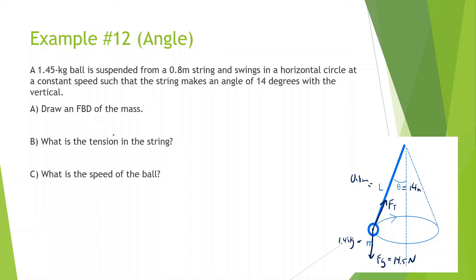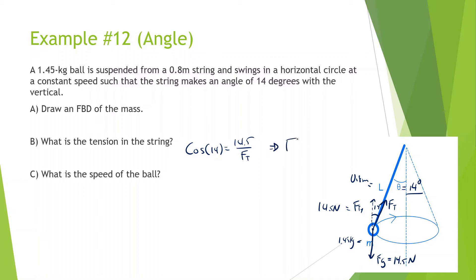What is the tension in the string? This angle here is going to be the same as the string angle, 14 degrees. The force of tension in the y direction equals the force of gravity, so that's also 14.5 newtons. We can do cosine of 14 equals adjacent 14.5 divided by the hypotenuse force of tension. So 14.5 divided by cosine of 14 gives us 14.94 newtons.